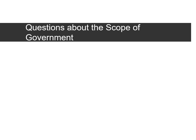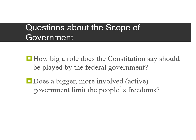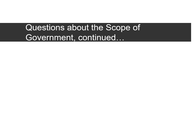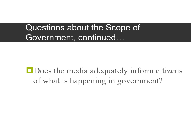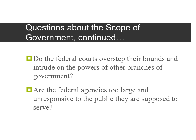Questions about the scope of government: How big a role does the Constitution say should be played by the federal government? Does a bigger, more involved or active government limit the people's freedoms? And do we need a bigger, more involved government to protect our freedoms? Does the media adequately inform citizens of what is happening in government? And do the federal courts overstep their bounds and intrude on the powers of other branches of government?